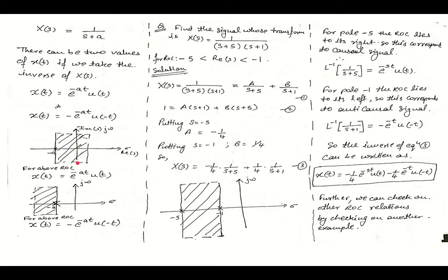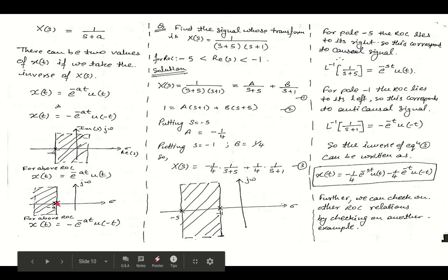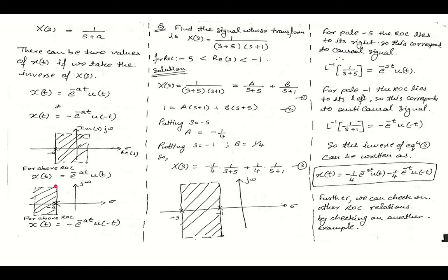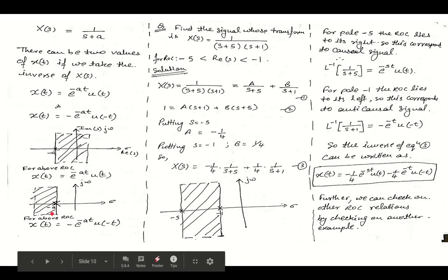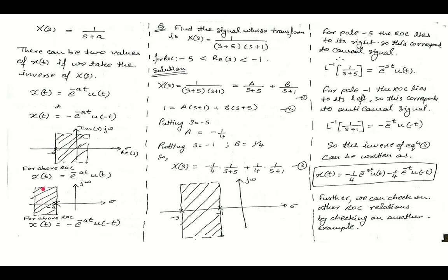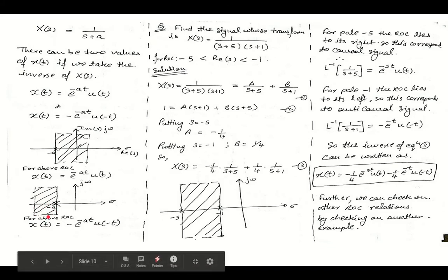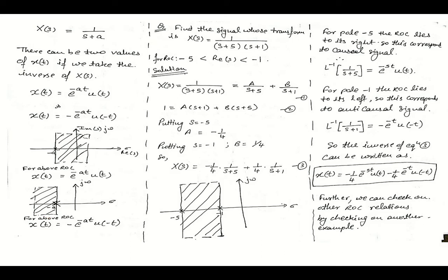then if the ROC lies to the right of the pole, the signal is considered to be causal, and the inverse of 1/(s+a) yields x(t) = e^(-at)·u(t). Similarly, if the ROC is on the left side of -a, then the signal x(t) = -e^(-at)·u(-t), and the left side is considered as anti-causal.